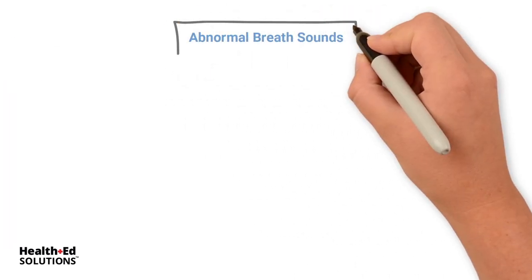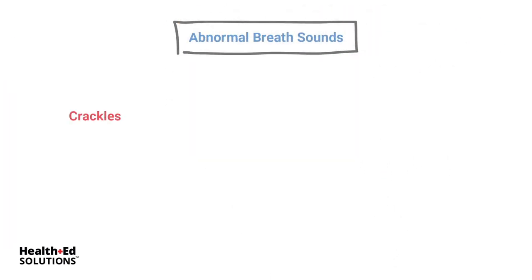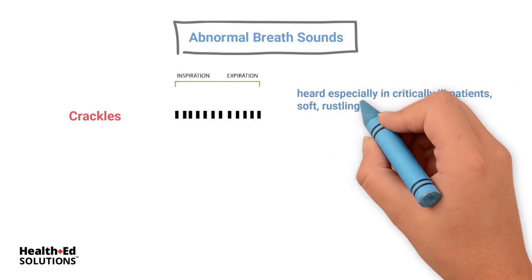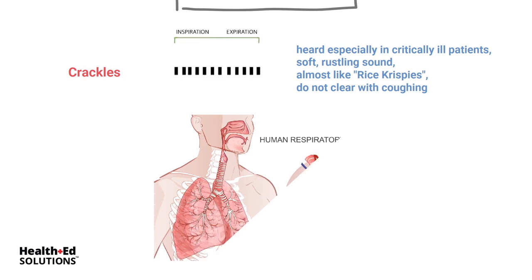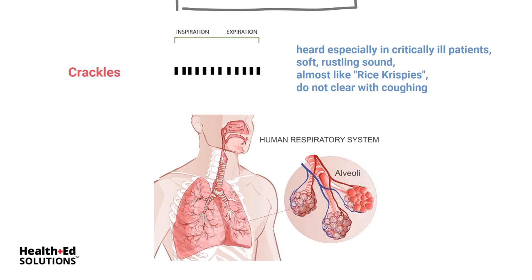Abnormally, we can hear crackles, especially in our critically ill patients. Crackles are soft, rustling sounds, almost like Rice Krispies. They do not clear with coughing — they are an indicator that there's something going on all the way down into the alveoli in the lower airways. They could indicate atelectasis, or you might hear crackles in someone with pneumonia, because pneumonia is an infection of the lower airways.